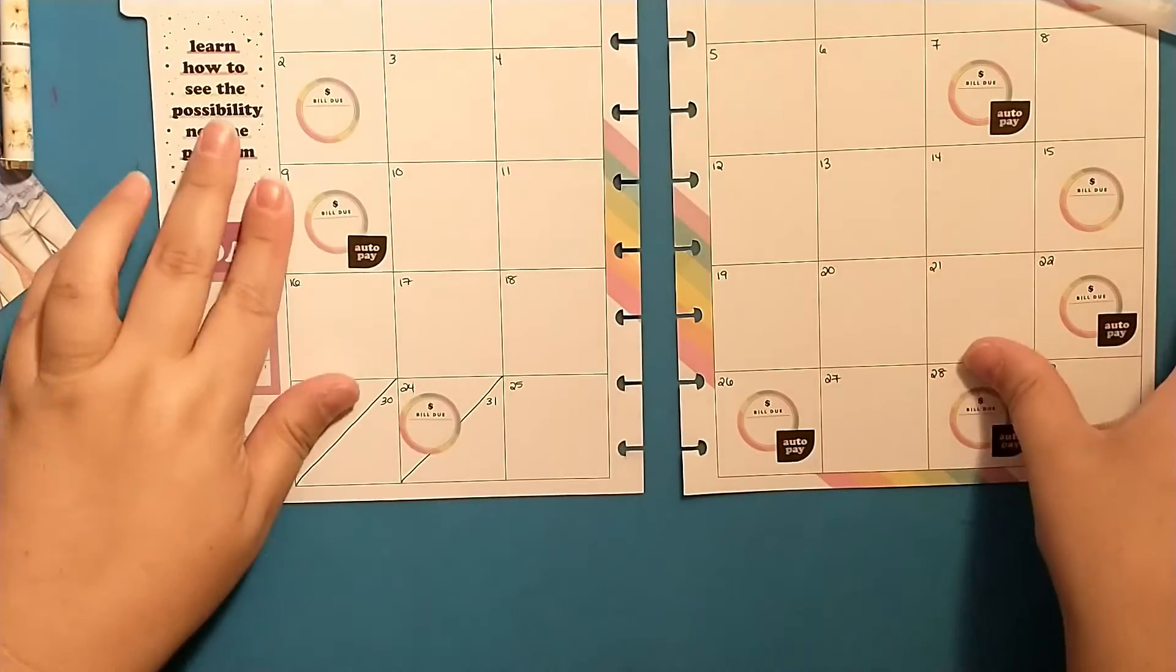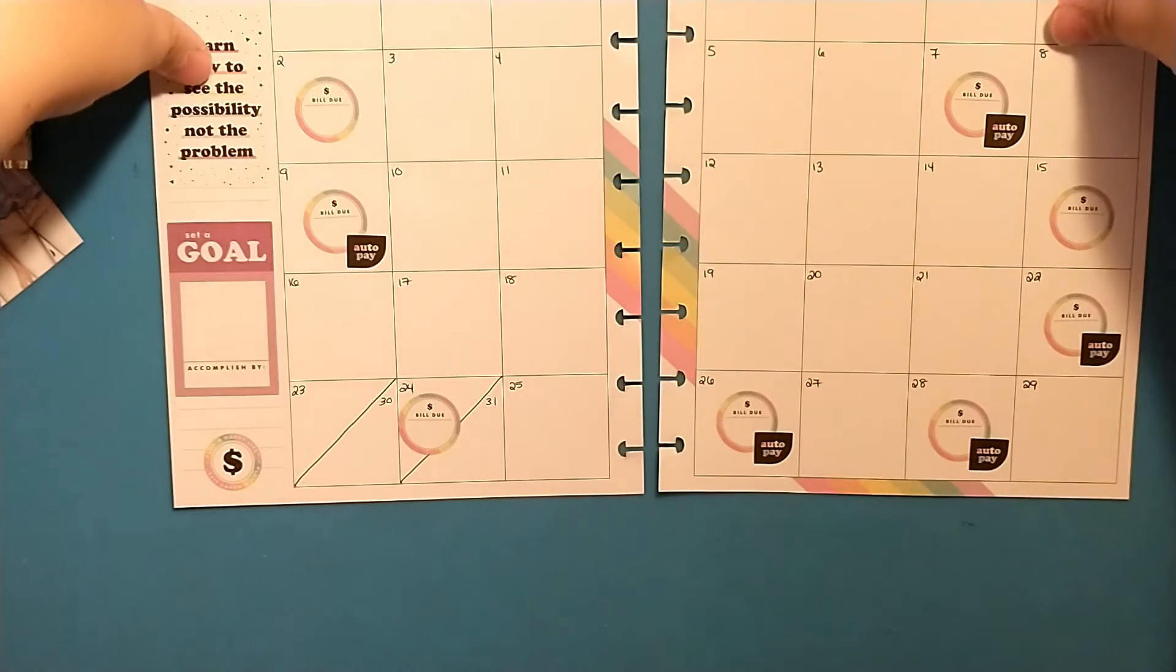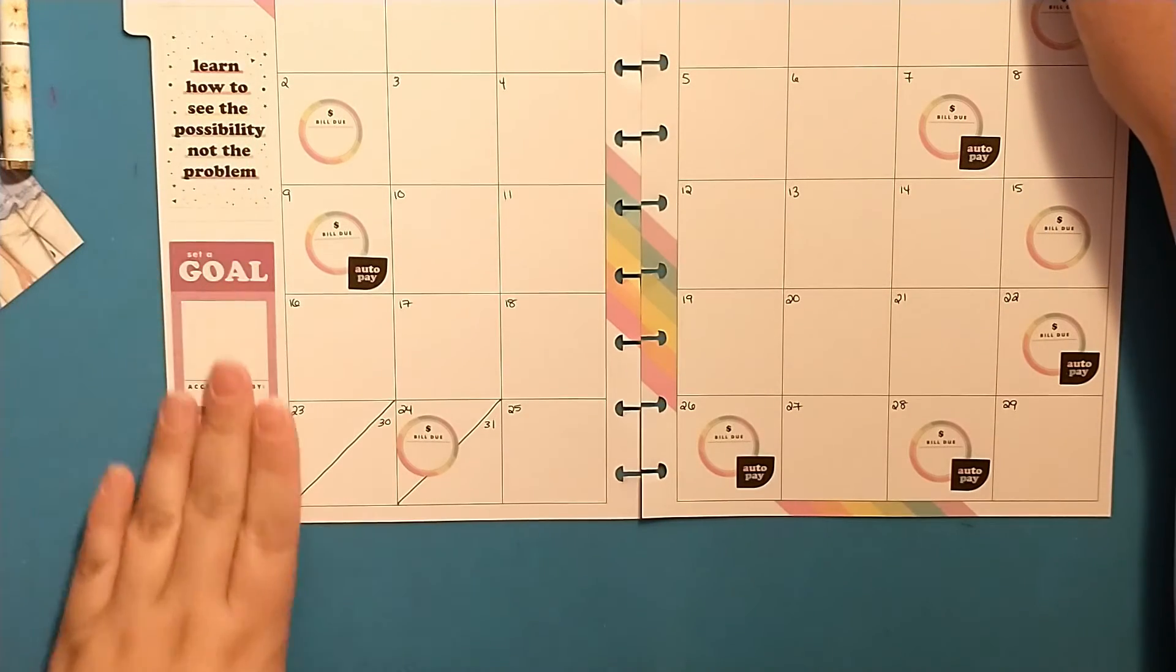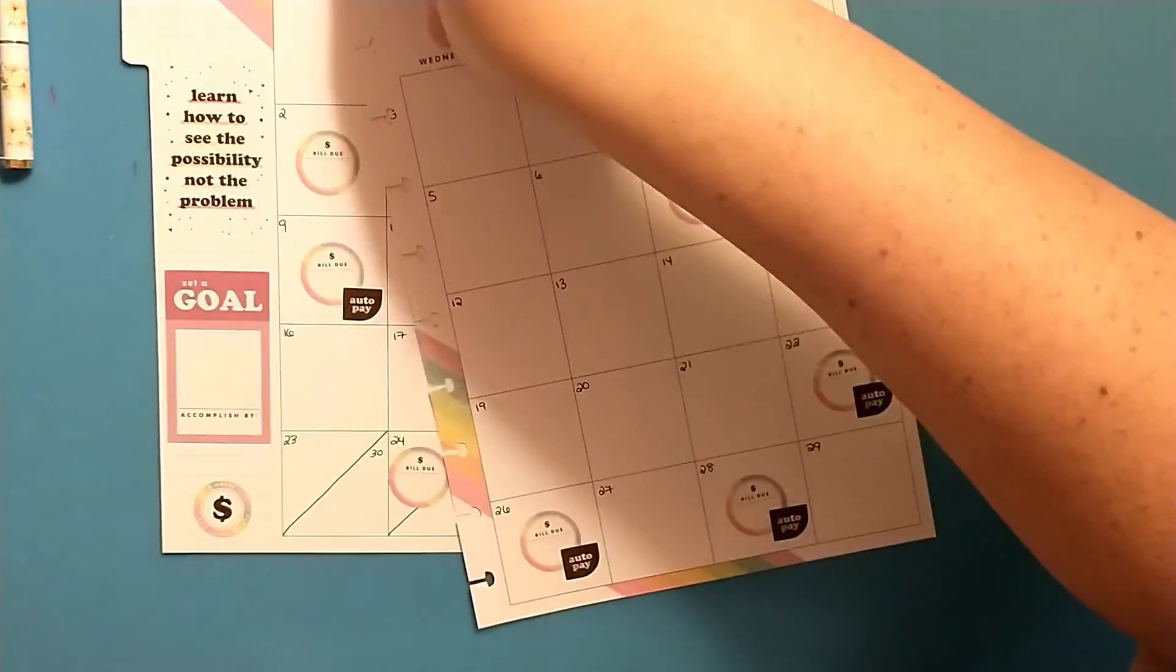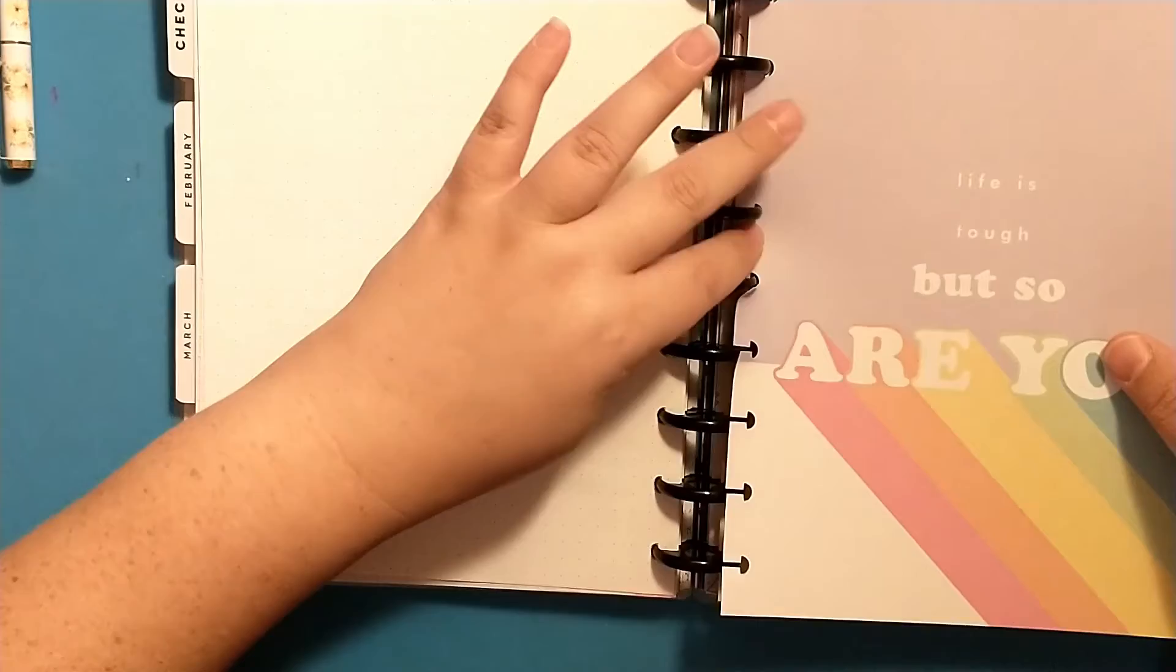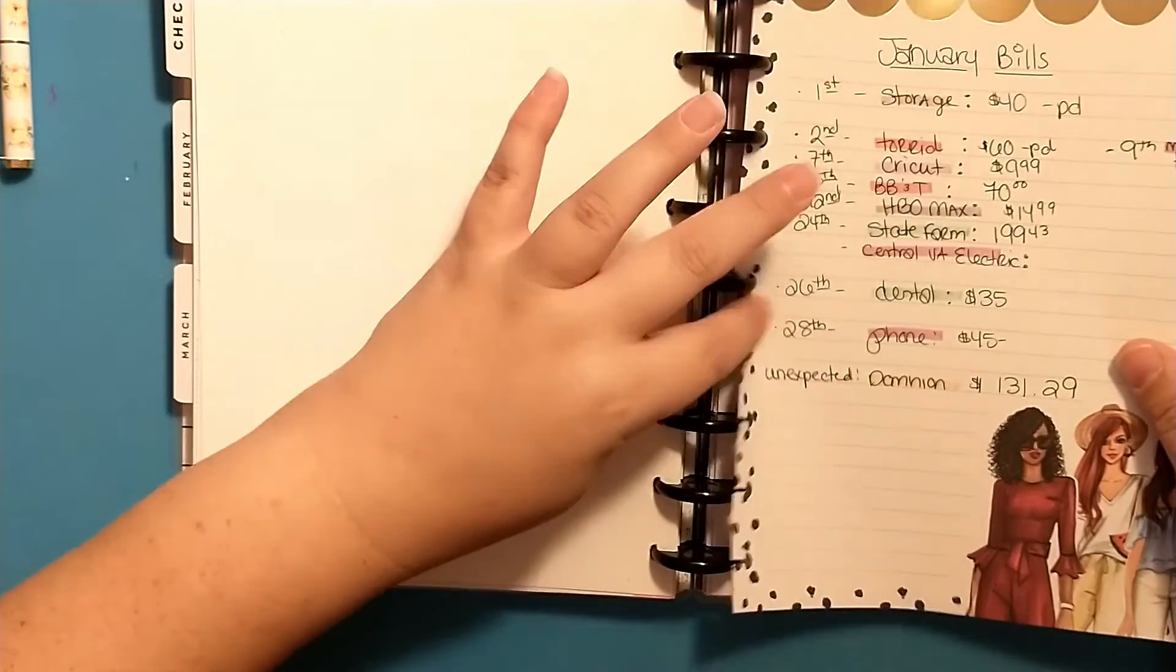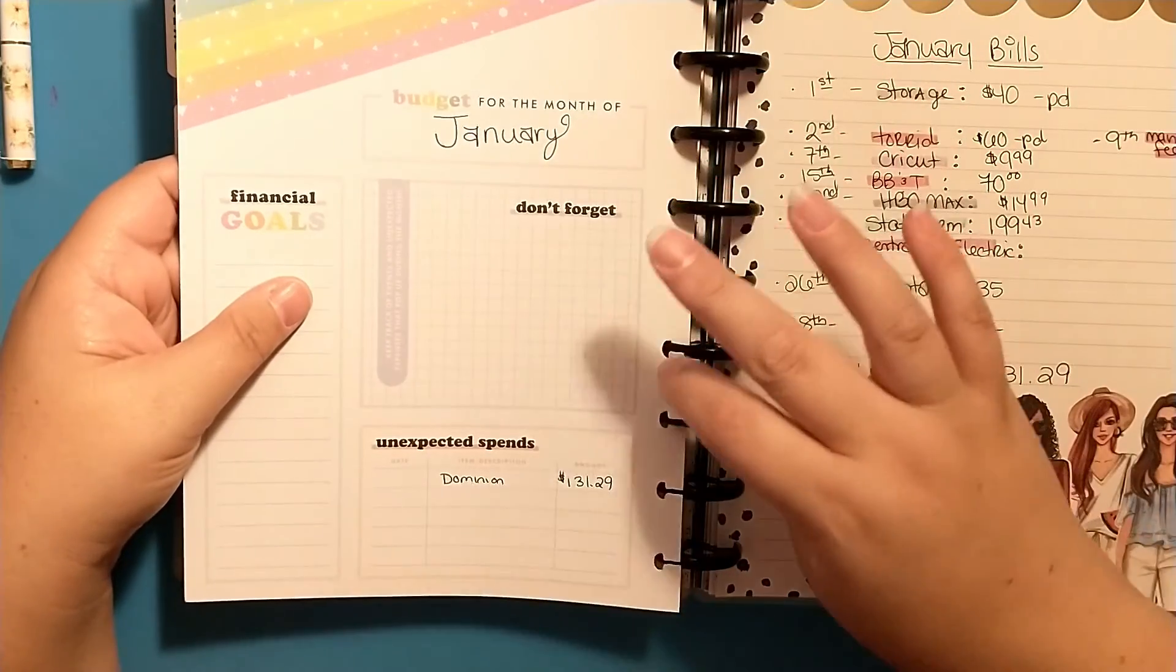So that is all there is to it. I have my monthly all set up and I could do further decorating to this, but I really like to keep my budget planner functional. So let me grab my planner and we can pop these pages back in, and then I will fill in my bills on here later. So I'm going to put that back in, then I'm going to add this cheat sheet to make sure I don't miss any bills, and then I will put my January back on here.